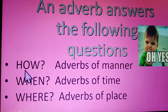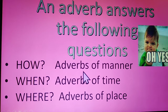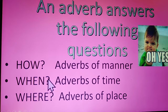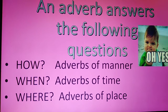How adverbs indicate adverbs of manner — they tell us how the action is done. The second type: when adverbs, also called adverbs of time — they tell us when the action happened or will happen. The last one: where adverbs, indicating adverbs of place — they tell us where the action happened or will happen.